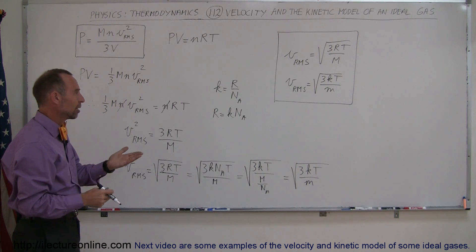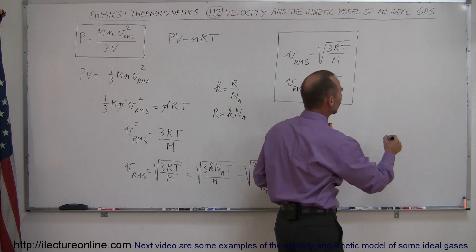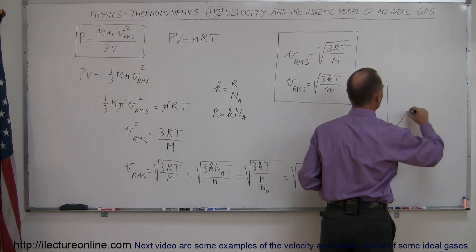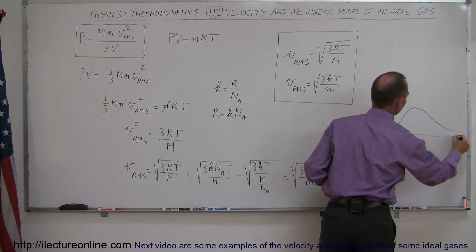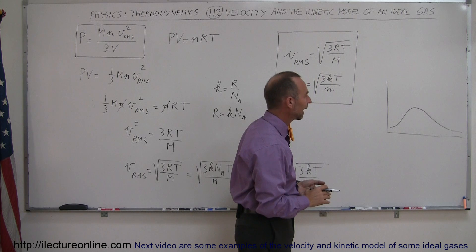Because there's molecules that move a lot faster, molecules that move a lot slower. It turns out that the velocity kind of has a distribution that kind of looks like this. Like so. It's kind of a squished normal distribution like that.